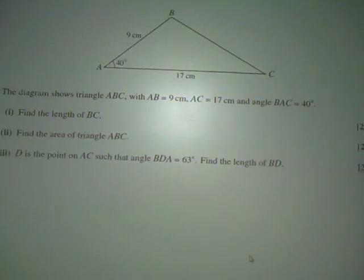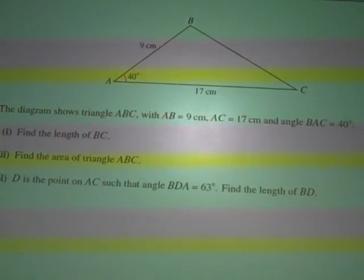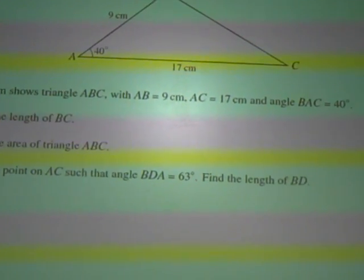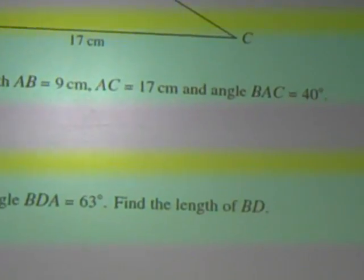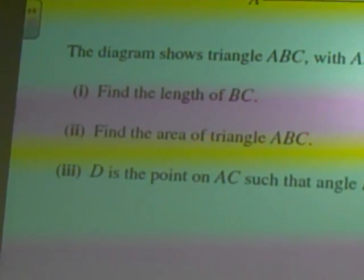The triangle ABC. AB is 9, AC is 17, and the angle BAC is 40 degrees. Find the length BC.